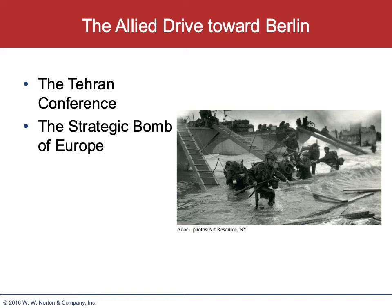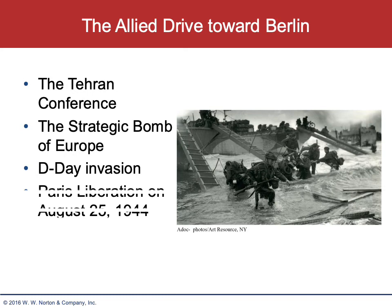At Tehran, Stalin signed on to the unconditional surrender pledge and gave his first verbal agreement that he would enter the war with Japan after the defeat of Hitler. The Americans agreed to an invasion of the European mainland by the spring of 1944. Strategic bombing was putting unbelievable pressure on German industry. It was up to Allied forces under Eisenhower to defeat the Atlantic Wall and invade France. On June 6th, 1944 — referred to as D-Day — over 5,300 vessels carried 370,000 soldiers across the English Channel. After two weeks, two million troops had landed in France, and on August 25th, Paris was liberated.